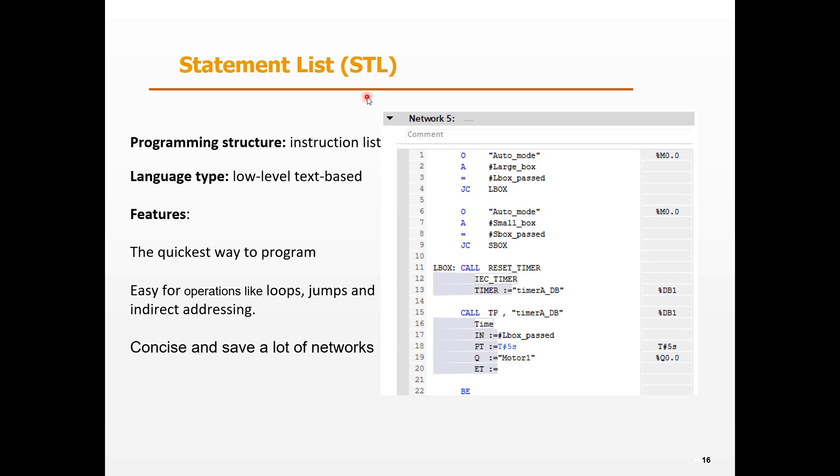STL is a low-level assembly language. The programming structure is like the instruction list. We can use instructions to control the CPU directly. So, STL is often the quickest way to program PLC code. Performing more complex operations like loops, jumps, and indirect addressing becomes easier in STL. It is really concise and will save a lot of networks.